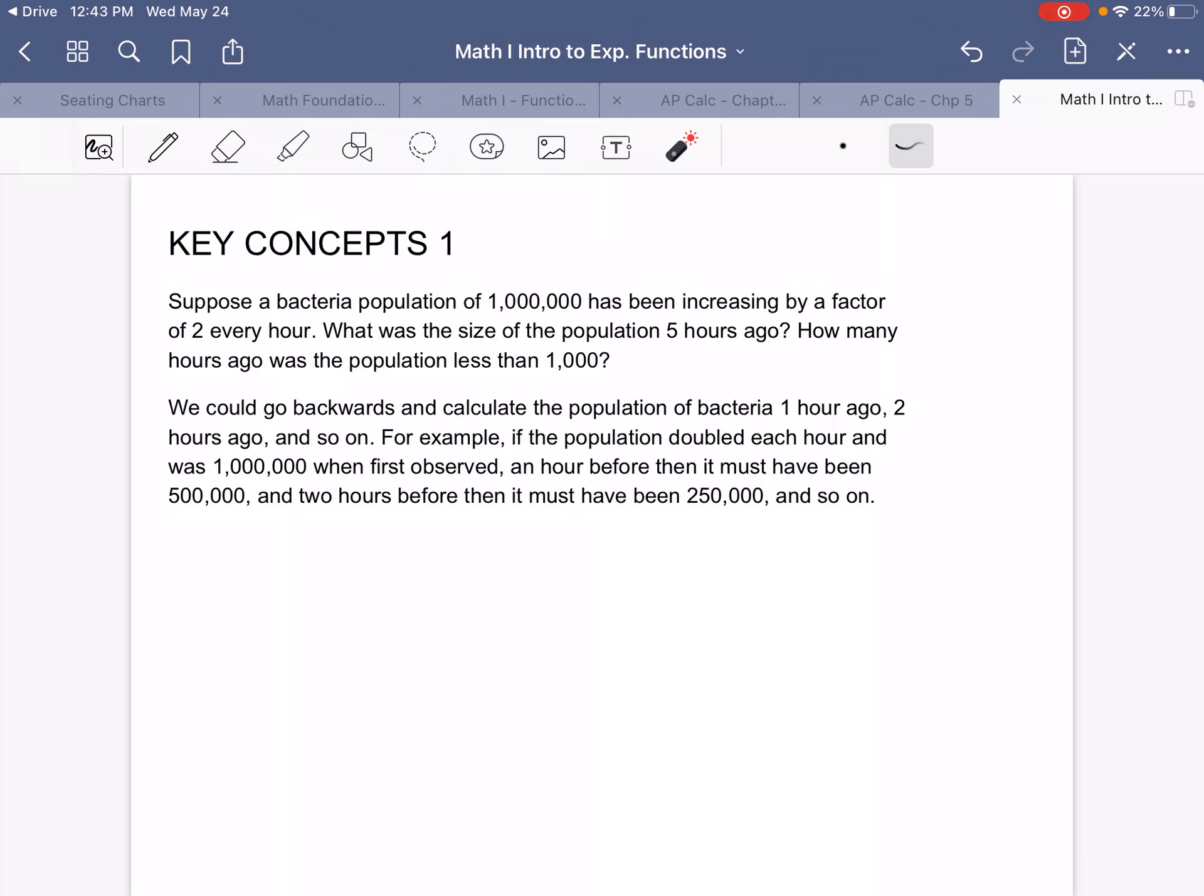We could go backwards and calculate the population of bacteria 1 hour ago, 2 hours ago, by dividing by 2, since it's doubling every hour. And if we're going backwards, we're going to divide by 2, or take a half of what we have. So that would be 500,000. 2 hours before that would be 250, because cut in half, cut in half.